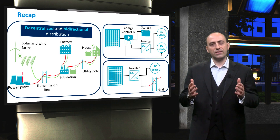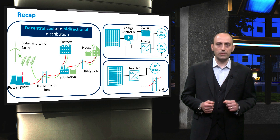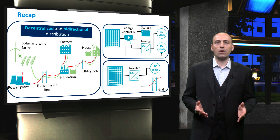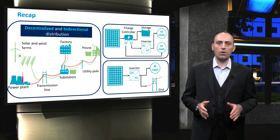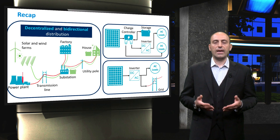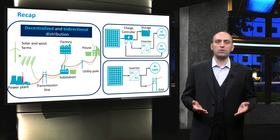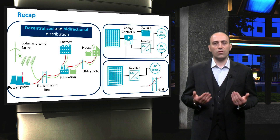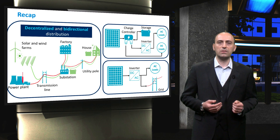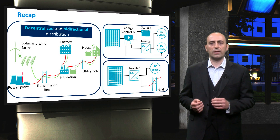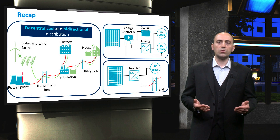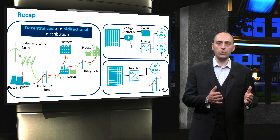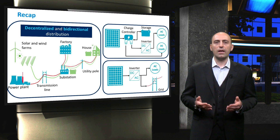Now it is time to recap what we have seen in this introduction chapter. The electricity network of the future integrates renewable energy sources that can not only generate power in solar and wind farms, but also on site. As a consequence, the electricity distribution becomes decentralized and bidirectional. We have discussed different types of PV systems, such as a standalone PV system and a grid-connected system. In this video, we have also given a brief overview of the components forming PV systems, such as the PV modules, the balance of systems, and the outputs.